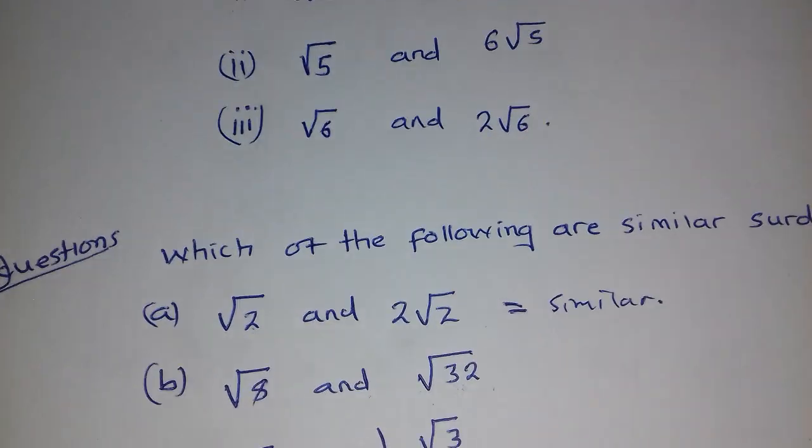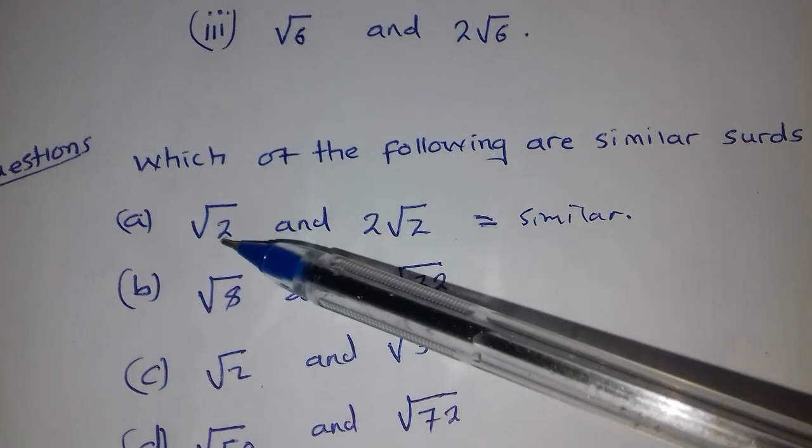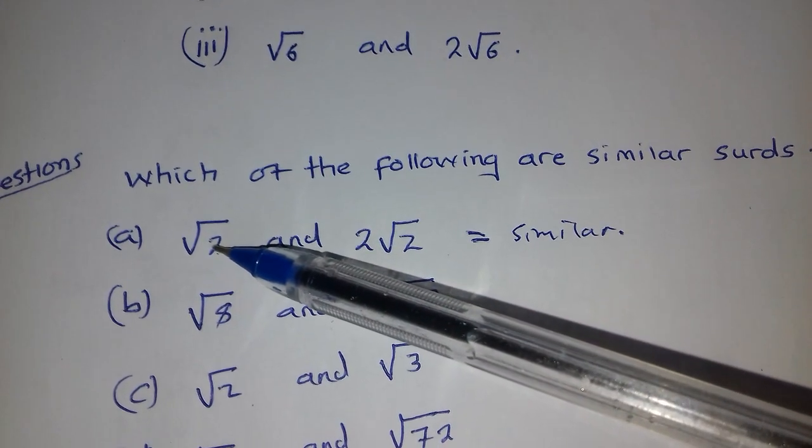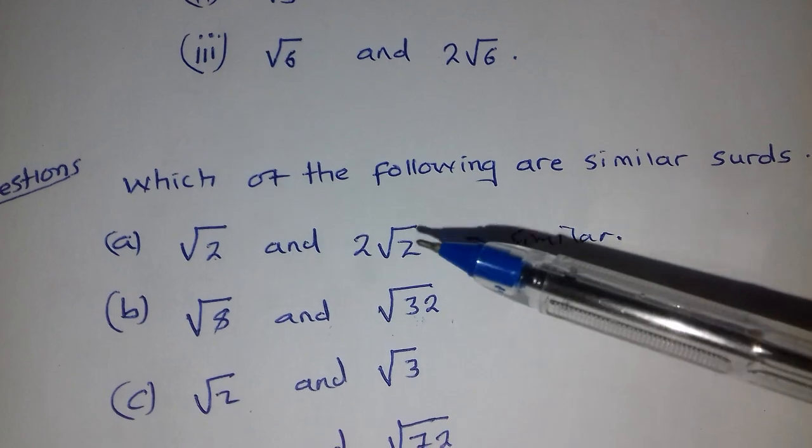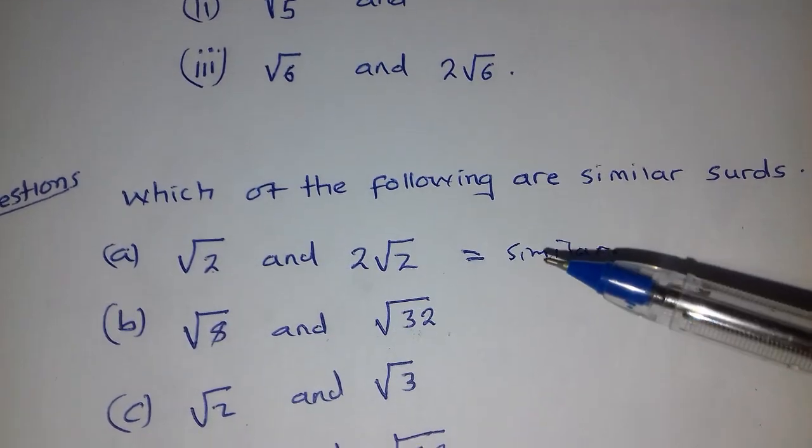Now how do questions come? This is how questions come. Which of the following are similar surds? So we have this one and this one. When you look at these two, there is the radicand 2 there and the radicand 2 there, therefore these two are similar surds.